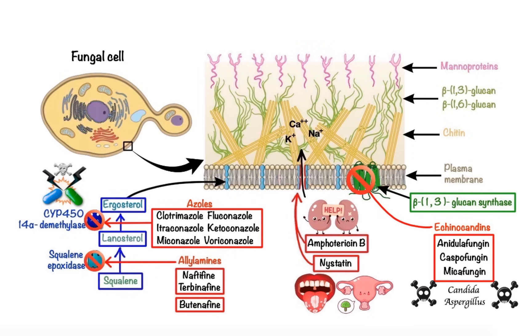Furthermore, because the enzyme system for beta-glucan synthesis is absent in human cells, unlike the other antifungals, echinocandins have relatively low potential for toxicity or serious drug interactions.